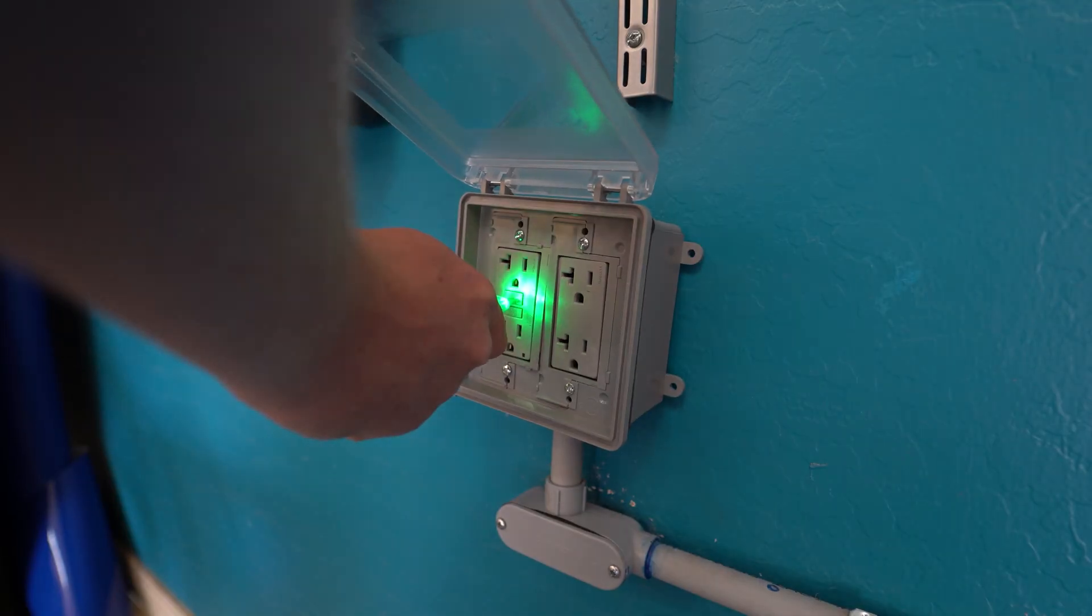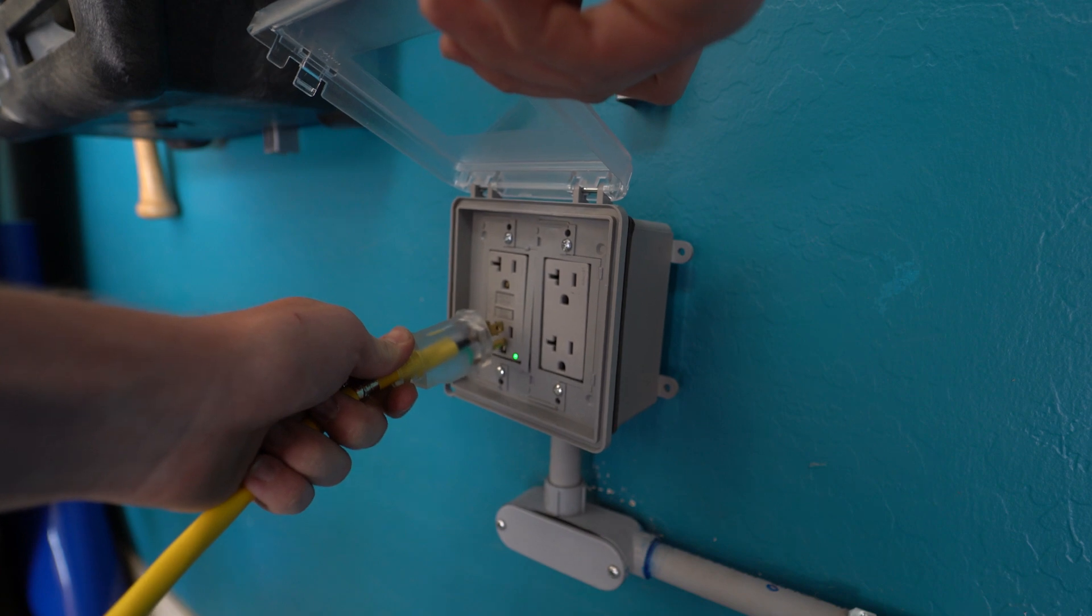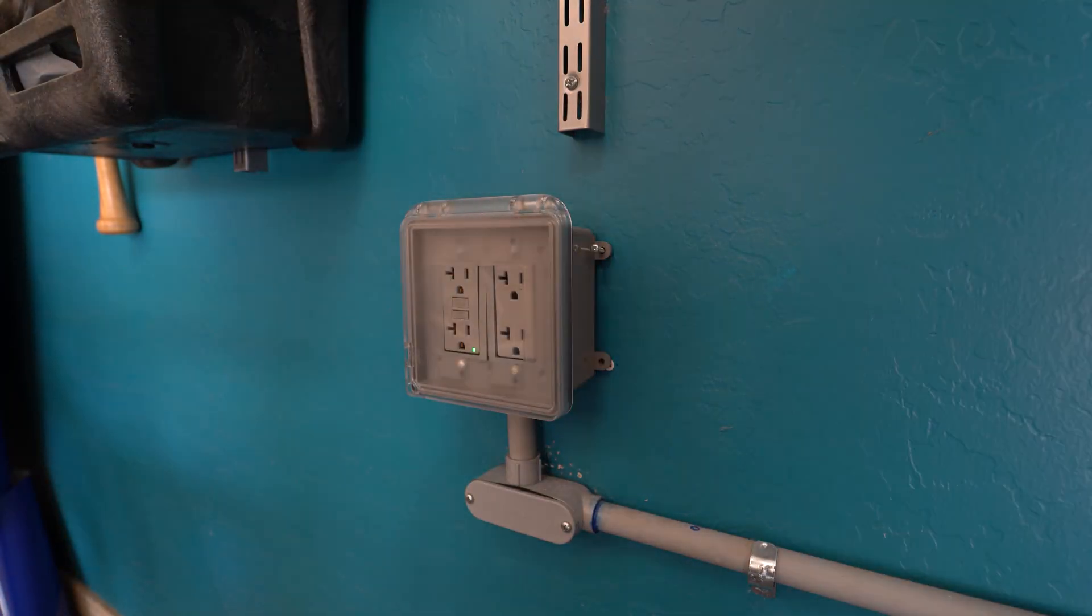When the GFCI first gets power, you're going to need to click the reset switch. If the GFCI has it, the indicator should be green. Test the outlet to make sure it works. Now position the electrical box and screw it into the wall.